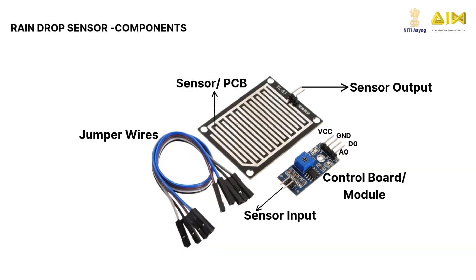The raindrop sensor mainly consists of two parts: the rain detection sensor PCB and the signal processing module. This board also has a comparator OP amp on board that is responsible for converting the incoming analog signal from the photodiode to a digital signal. The sensitivity of the device can be adjusted with the potentiometer. The rain detection sensor module has four pins: VCC, GND, A0, and D0.